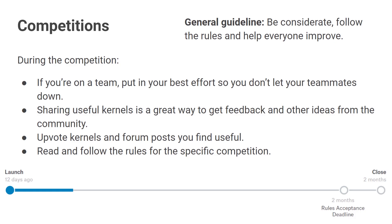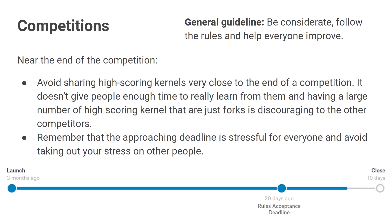Sharing useful kernels is a really great way to get feedback and other ideas for the community. Some types of kernels that are super helpful are really detailed exploratory data analysis kernels and pre-processing pipelines with helpful functions for people. Those are things that can be really helpful and get a lot of upvotes and maybe some medals on the competition. If there are kernels or forum posts that you find useful, give them an upvote — that says thank you to the author and encourages them to produce other useful content. And of course, read and follow the rules for the specific competition.